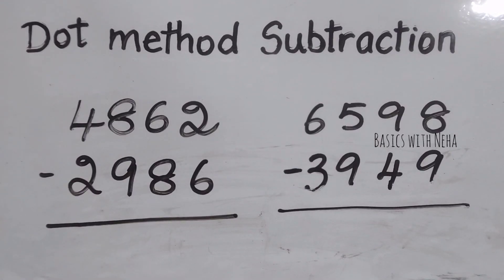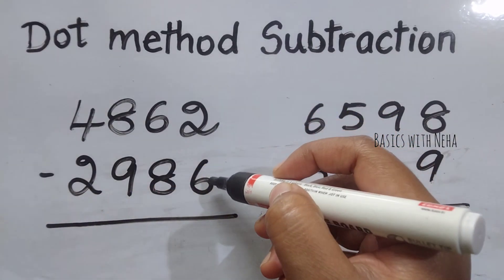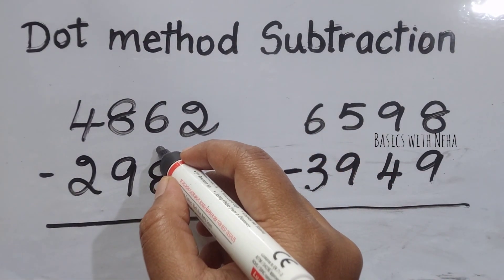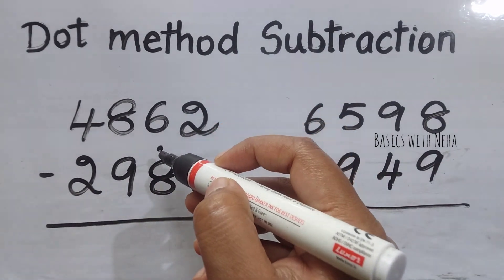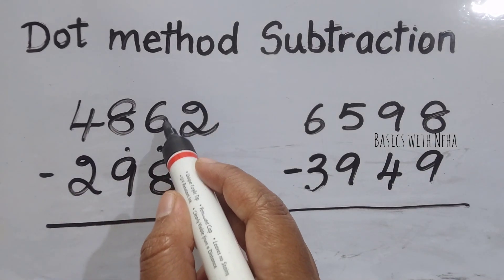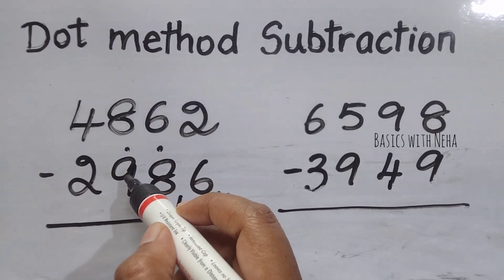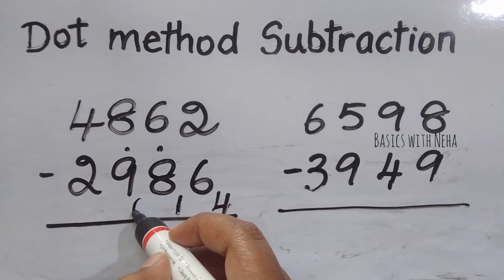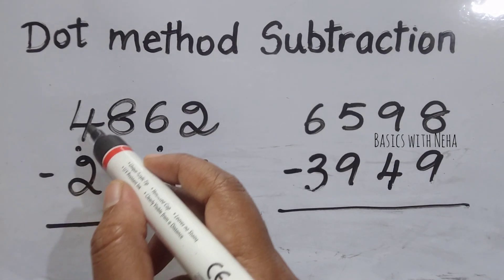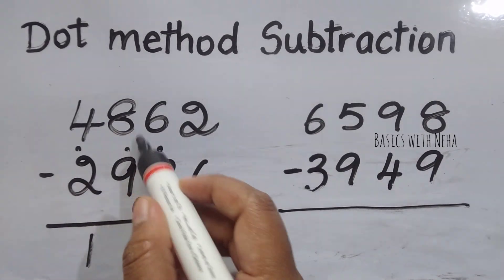Now let's try with 4 digits: 4862 minus 2986. The minuend is smaller than the subtraction, so take the complement of 6 on base 10, which will be 4. Since I've taken the complement, I'll put a dot. Again the minuend is smaller, so don't consider this dot but take the complement of 8 on base 9, which is 1. Take the dot. Again the minuend is smaller than the subtraction, so take the complement of 9 on base 9, which will be 0. Since you have used the complement, take a dot. Consider the dot to be 1 because the minuend is larger than the subtraction: 4 minus 3 will give me 1, and 8 plus 0 will give me 8.